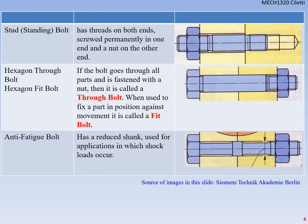Looking at different bolt types: a stud is a standing bolt with threads on both ends — one end screws in permanently and a nut is placed on the other end, useful for things like mounting poles out of concrete. A hex through bolt goes all the way through a hole and gets a nut on the end. An anti-fatigue bolt has a reduced shank to absorb shock loading so it doesn't snap as easily.